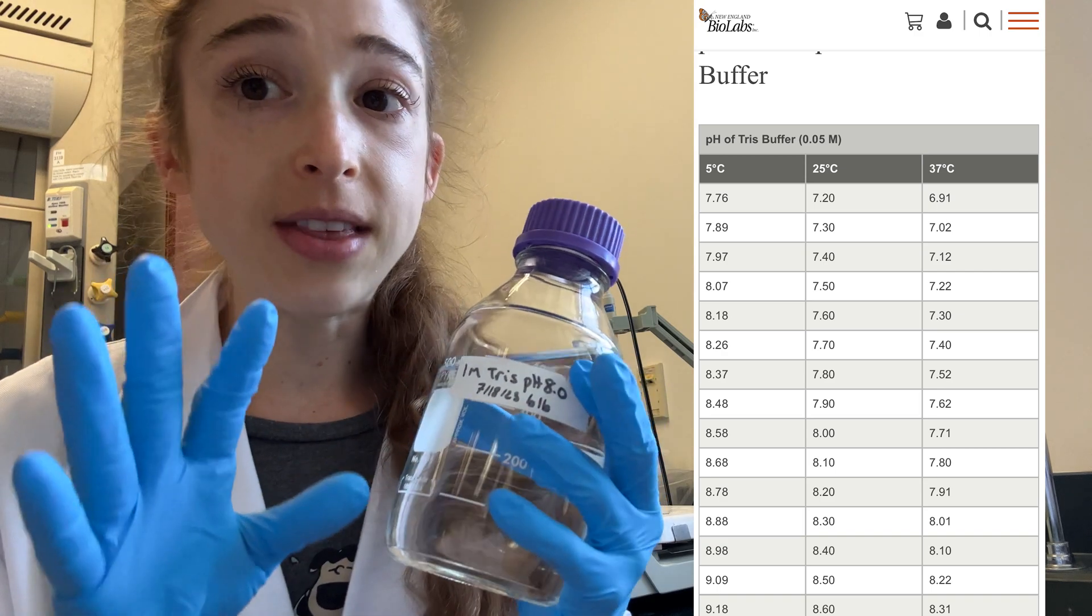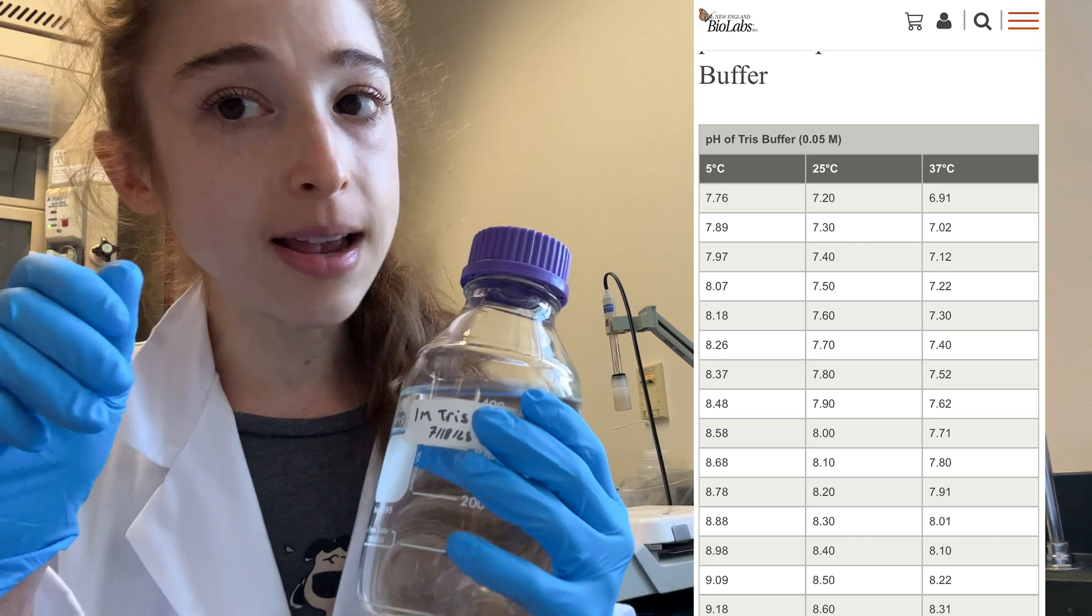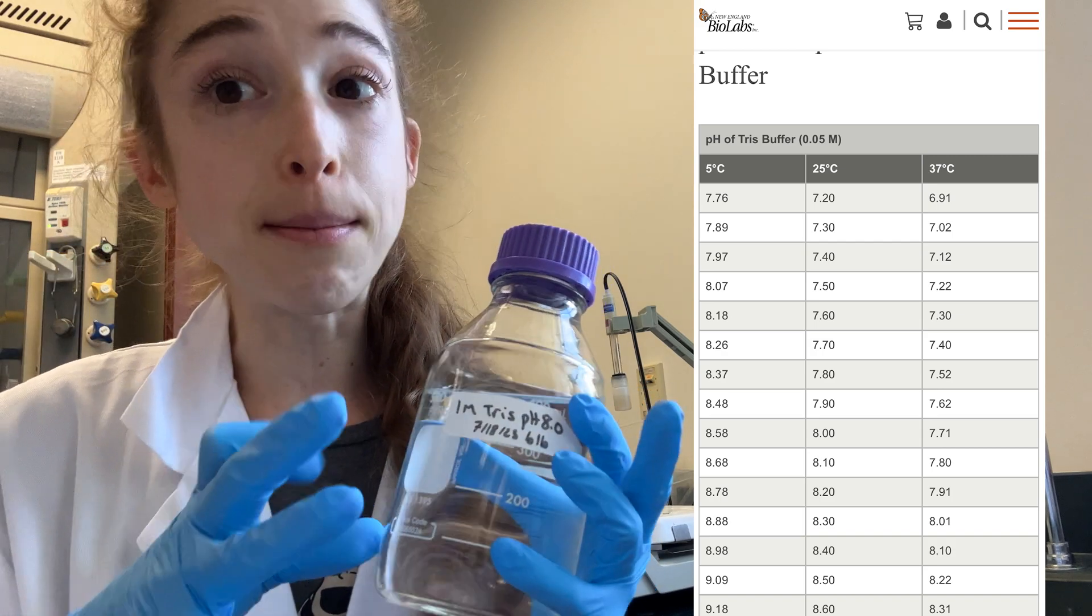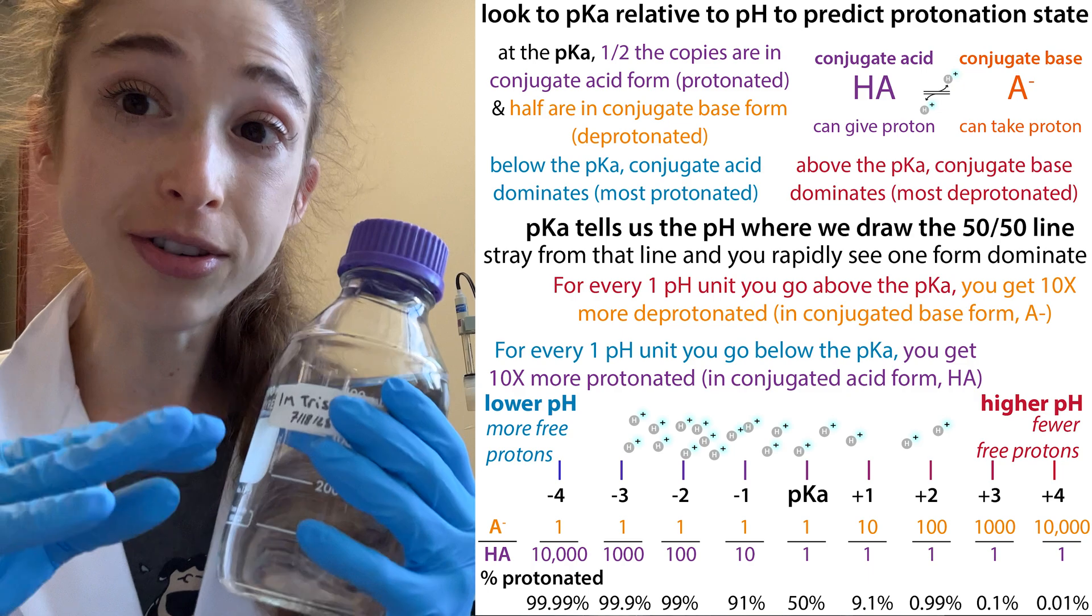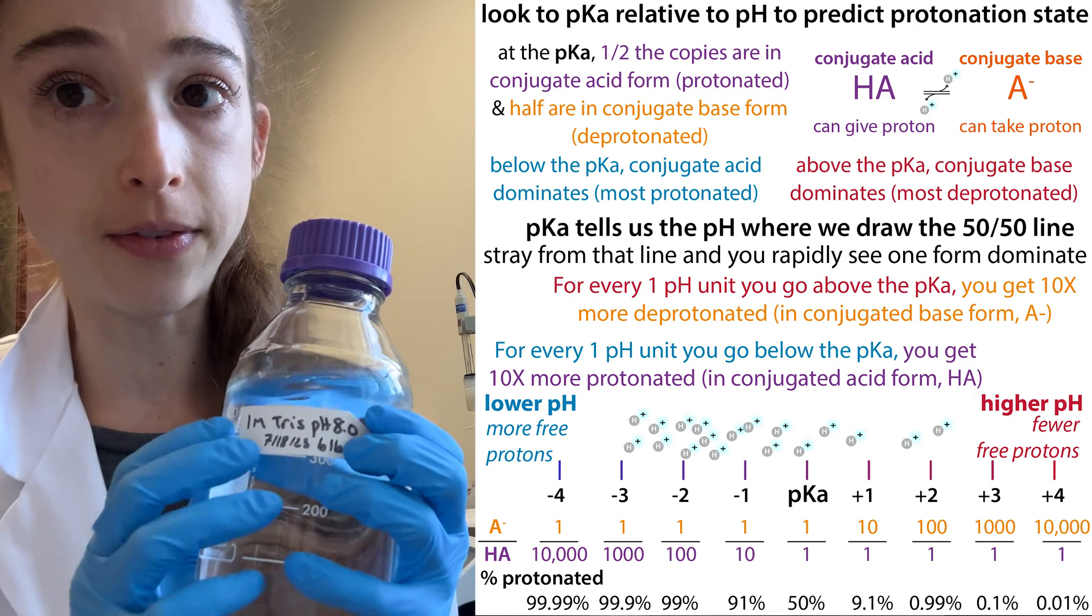You can kind of think of it this way. It's easier to remember that as you increase the temperature, you're going to make it more acidic. You're going to decrease the pKa, make it easier for those protons to pop off of the Tris.